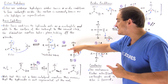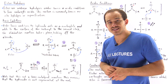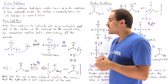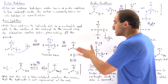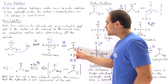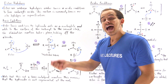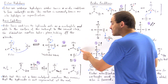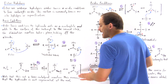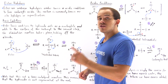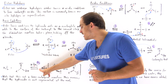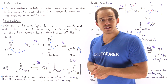We produce this intermediate carboxylic acid as well as this alkoxide. Because we are under basic conditions, this will not be the final product. In step number three, this alkoxide will grab and deprotonate the H off of our oxygen, forming a resonance-stabilized intermediate known as the carboxylate anion. We also form this alcohol molecule.